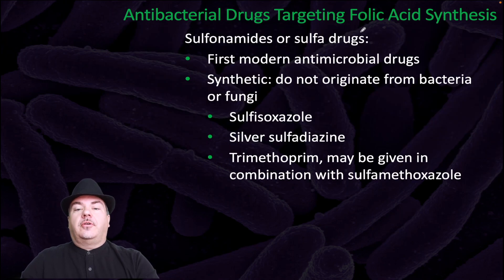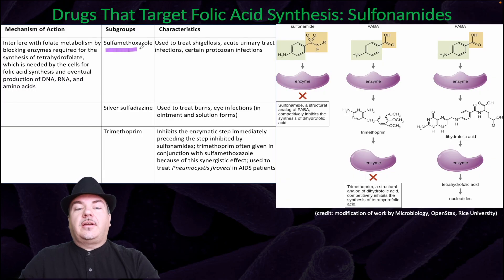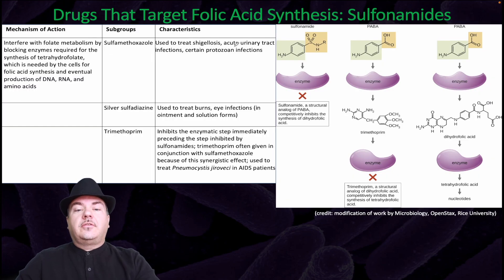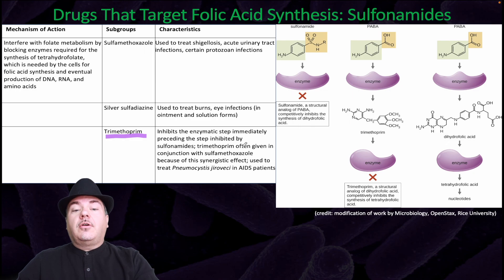Antimicrobial drugs targeting folic acid synthesis include sulfonamides, or sulfa drugs — the first modern antimicrobial drugs, which are synthetic and do not originate from bacteria or fungi. Examples include sulfamethoxazole, used to treat acute urinary tract infections or certain protozoal infections; sulfadiazine, used to treat burns and eye infections; and trimethoprim, which inhibits the enzymatic step immediately preceding the step inhibited by the sulfonamides. These two are often given in conjunction because of their synergistic effect, and the combination is used to treat pneumocystis in AIDS patients.